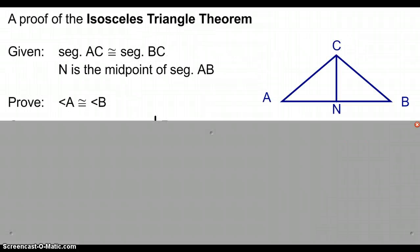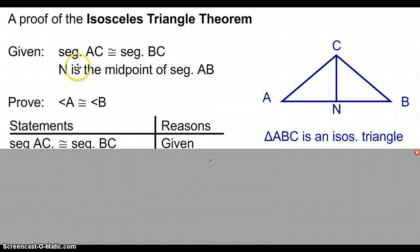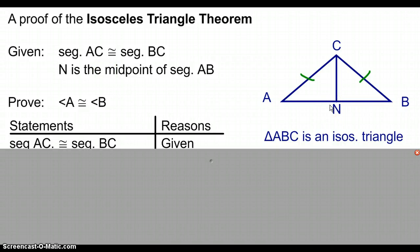A proof of this theorem: we're going to look at the following diagram. We have triangle ABC, and it is an isosceles triangle. We're given that segment AC and BC are congruent — those are the congruent legs of our triangle with base AB. We're also told that N is the midpoint of segment AB, and we're going to show that angle A and angle B are congruent.